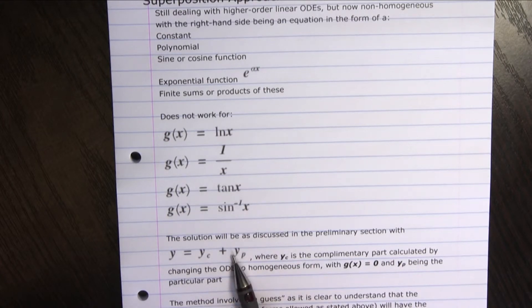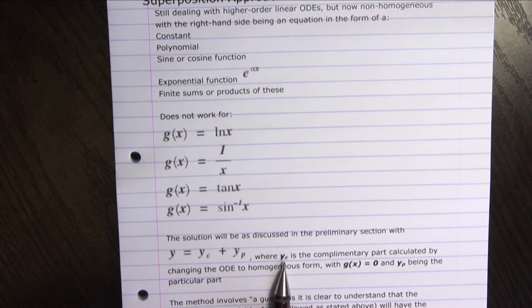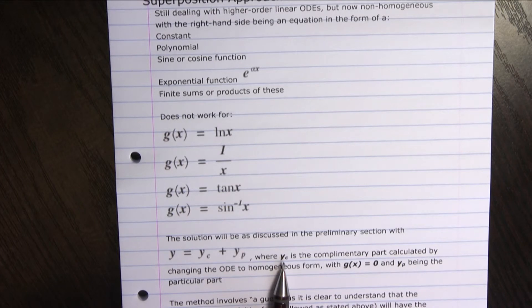In the preliminary section of this chapter, we saw that the general solution will have this form, where there's the complementary and the particular part, where the complementary part is going to be the same as we have done before with a homogeneous equation.